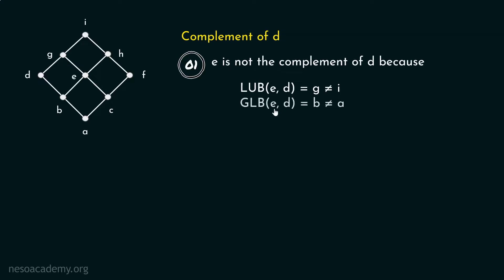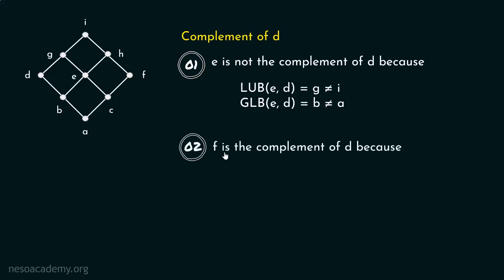And the greatest lower bound of E and D is equal to B, which is not equal to A. So it is clear that E is not the complement of D.